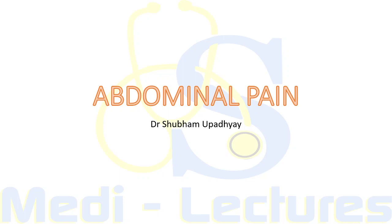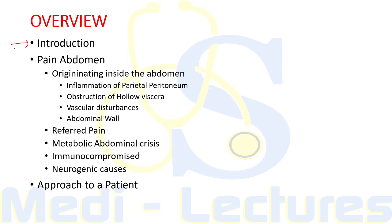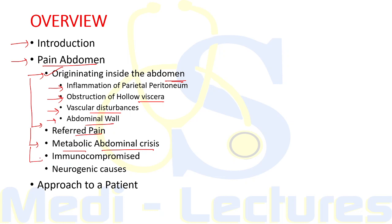Today we are going to discuss one of the most common symptoms by which patients present: abdominal pain. We will first see the intro, then discuss the various types of abdominal pain — those originating inside the abdomen, including inflammation of parietal peritoneum, obstruction of hollow viscera, vascular disturbances, and abdominal wall pain. Other types include referred pain, metabolic abdominal crisis, pain in immunocompromised individuals, and neurogenic causes.